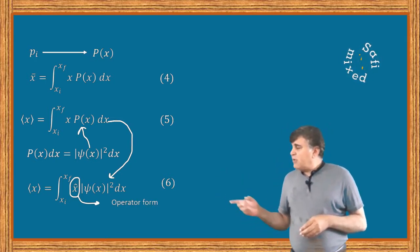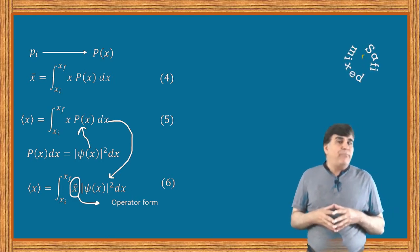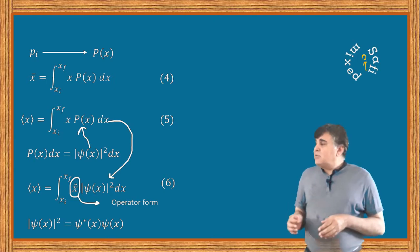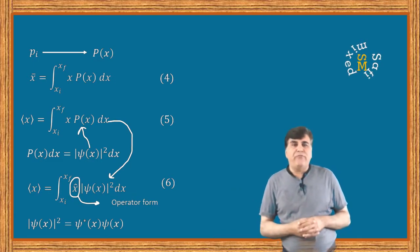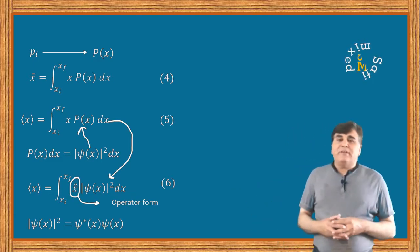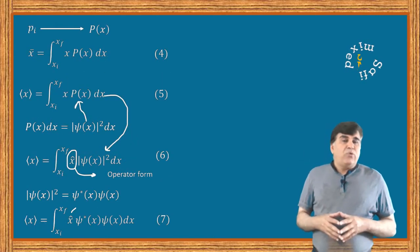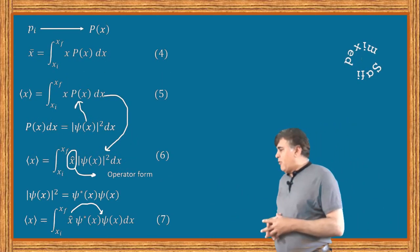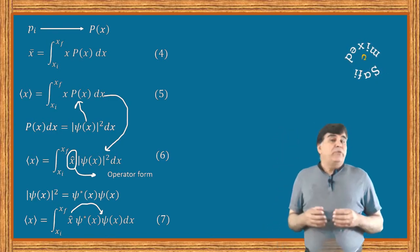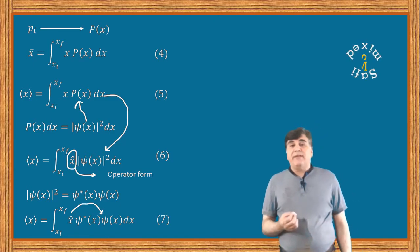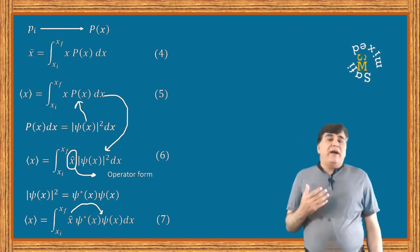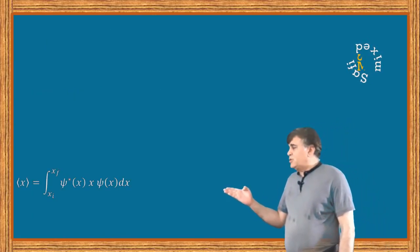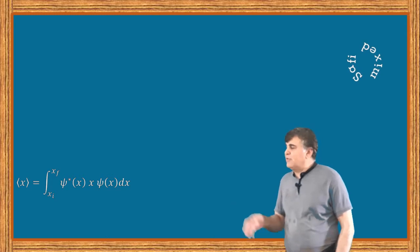Note that in this equation I have replaced x with the operator form x-hat. We also know that the modulus square of the wave function can be split into the complex conjugate of the wave function psi-star times the wave function psi. With this substitution, equation 6 can be expressed in a new form. Since the position operator acts as a multiplicative entity, we can change its position with respect to psi-star and write equation 7 with the position operator sandwiched between the conjugate of the wave function and the wave function itself.